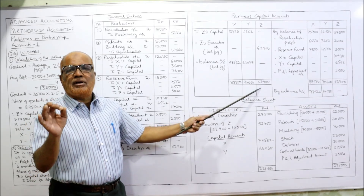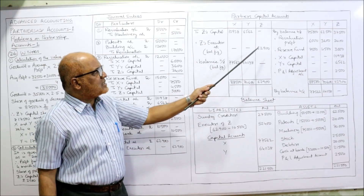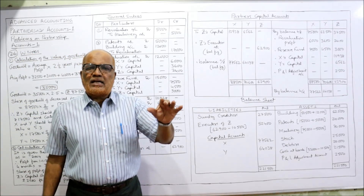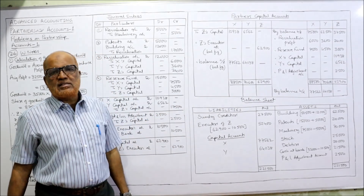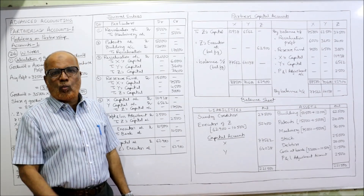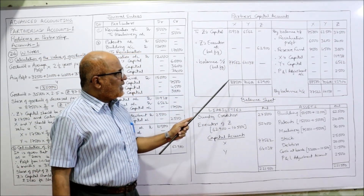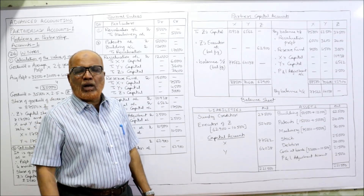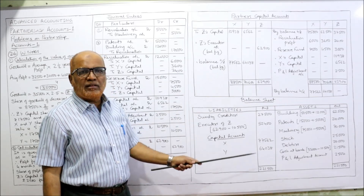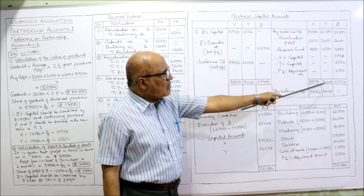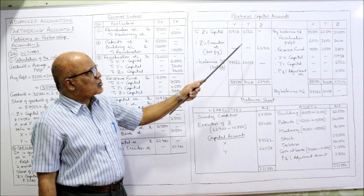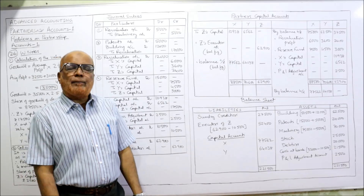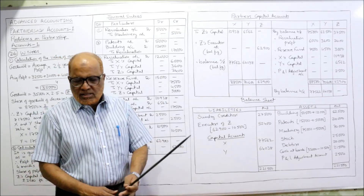Z's total of 62,900 is transferred to Z Executors' account. For X: total credit 88,500 minus debit 10,938 = balance carried down 77,562. For Y: total credit 70,600 minus debit 6,562 = balance carried down 64,038. These balances appear in the new balance sheet.